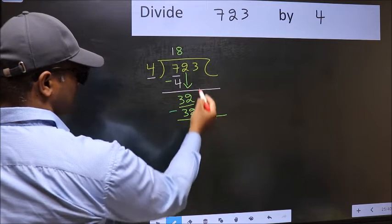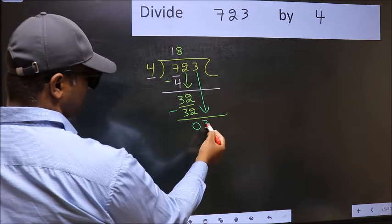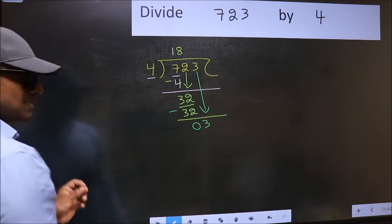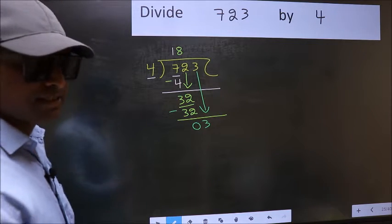After this, bring down the beside number. So 3 down. After this step, the mistake happens. And the mistake is this.